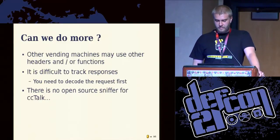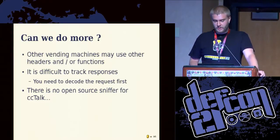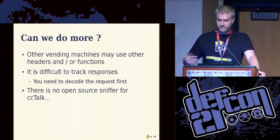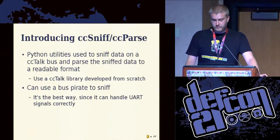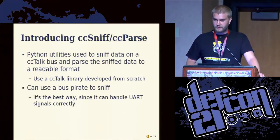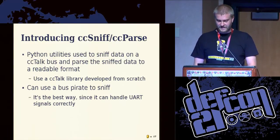But I was telling myself, can we do maybe more? Because that's a simple project — it only uses the coin acceptor I bought. There are many other machines that use these kinds of protocols. But the problem is that it's difficult to track those responses — you cannot easily see them because the header is always equal to zero and you don't know which answer corresponds to which request. And I didn't find any open source sniffer for CCTalk, so I created two tools called CC Sniff and CC Parse, used to sniff data on a CCTalk bus and parse it in a way that you can easily understand what happens on the bus.